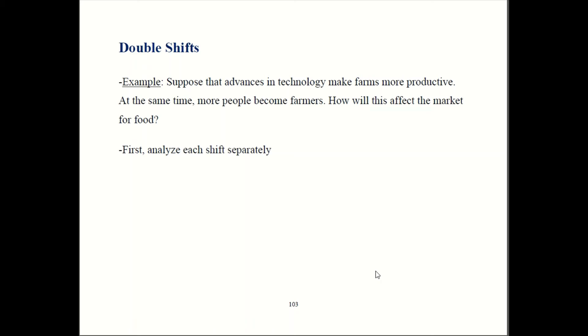Let's say a technology gets better and that makes farms more productive. At the same time, some people who are previously not farmers decide to get into the business. So, you have two things moving on at the same time. So, how is that going to affect the food market?